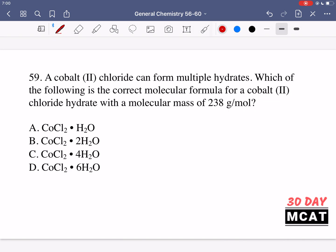In question 59 it says a cobalt II chloride can form multiple hydrates. Which of the following is the correct molecular formula for cobalt II chloride hydrate with a molecular mass of 238 grams per mole? It can have one, two, four, or six water molecules attached, but we're given this molecular mass so we need to find the correct molecular formula.